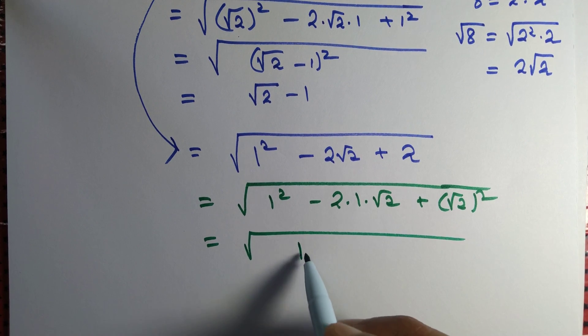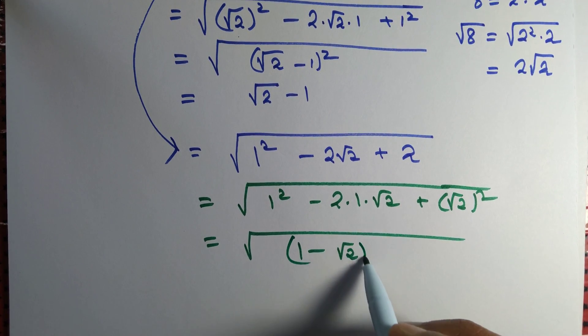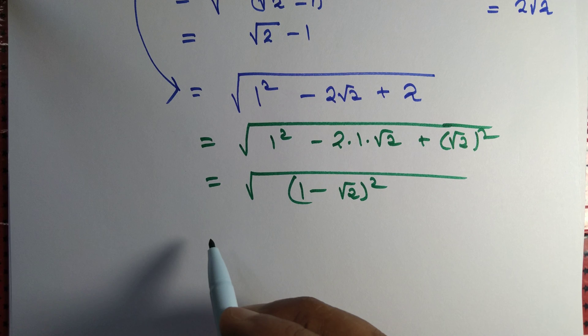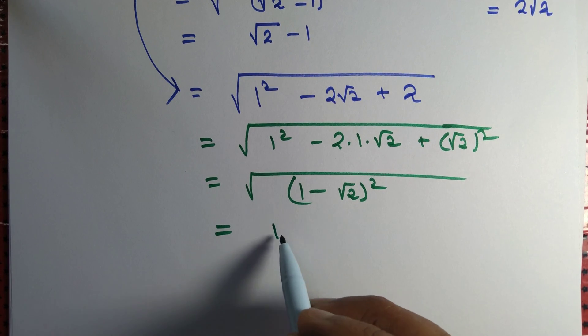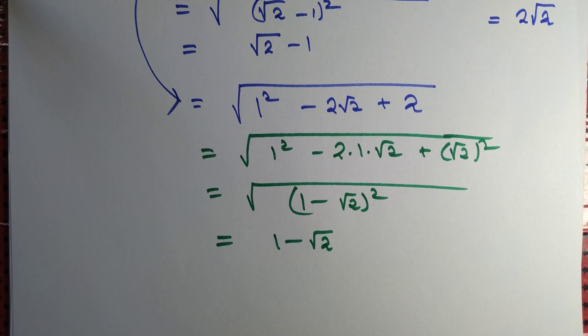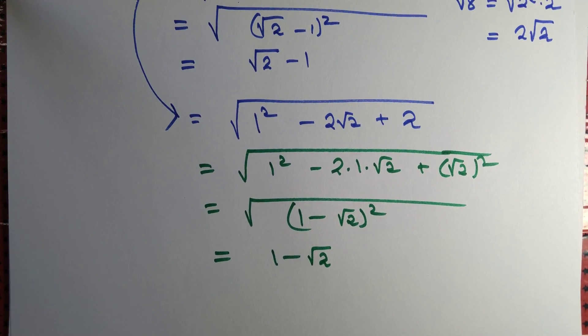Then he writes it as 1 minus root 2 whole thing square. And finally he writes it as 1 minus root 2. Is he correct? No. What's the wrong?